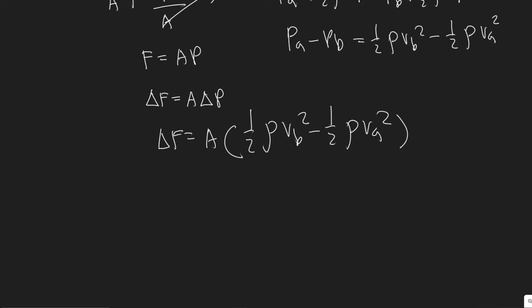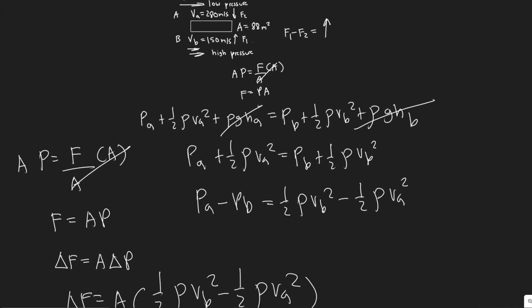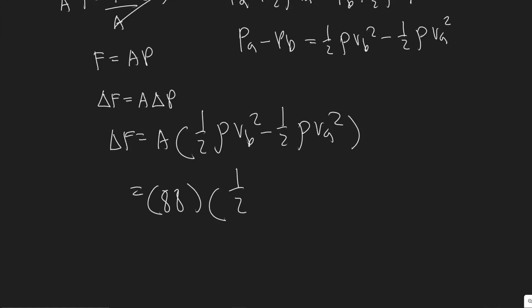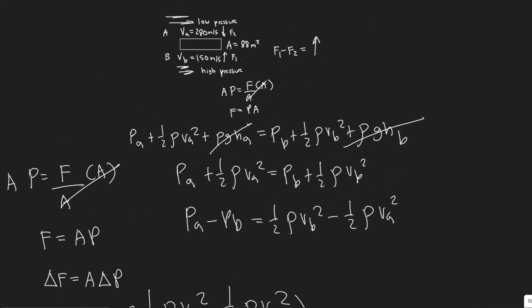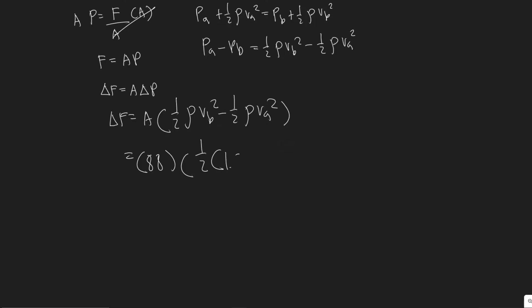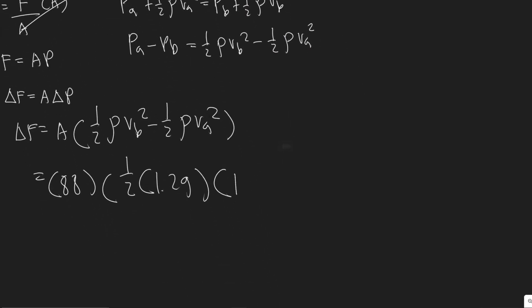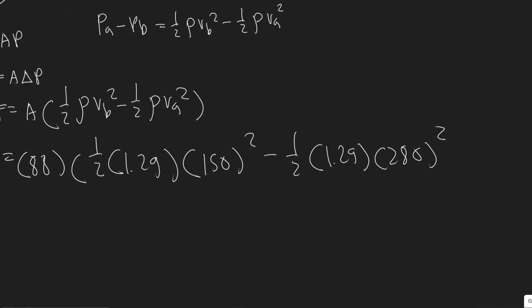Now we just plug in the values. The area is 88 meters squared. So: delta F equals 88 times one-half times rho — the density of air, which is 1.29 kilograms per meter cubed — times VB squared (150 squared), minus one-half times 1.29 times VA squared (280 squared). In the calculator: 0.5 × 1.29 × 150² minus 0.5 × 1.29 × 280², all times 88.